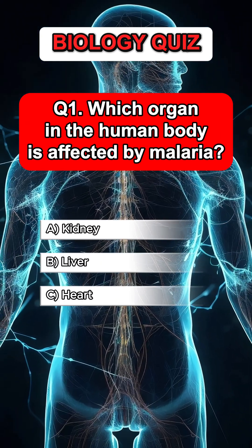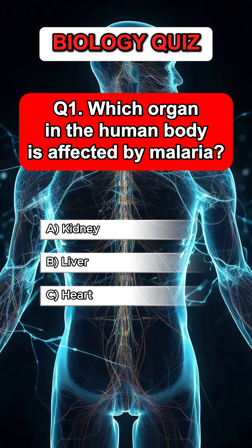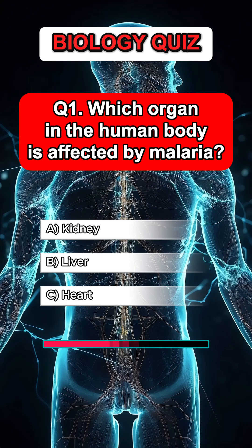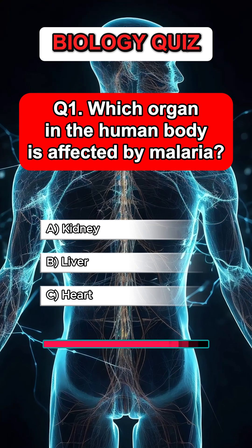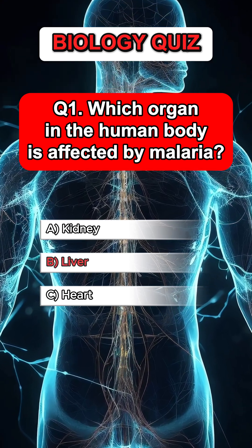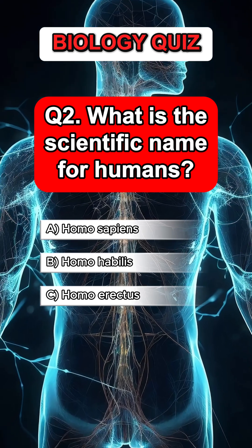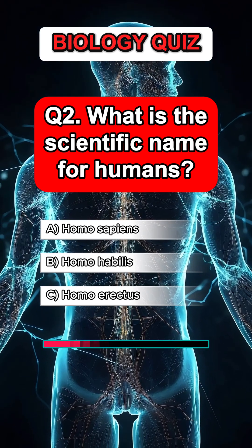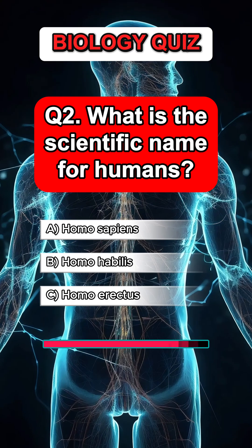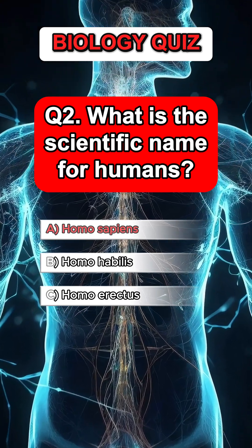Question 1. Which organ in the human body is affected by malaria? Answer B. Liver. Question 2. What is the scientific name for humans? Answer A. Homo sapiens.